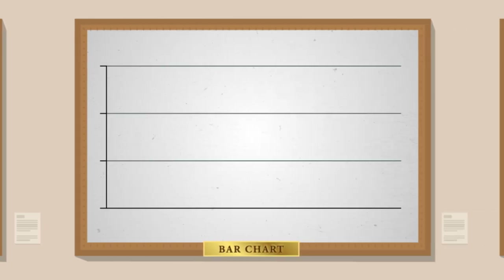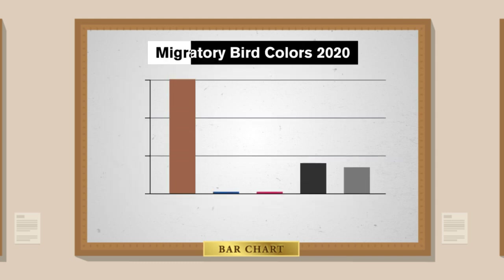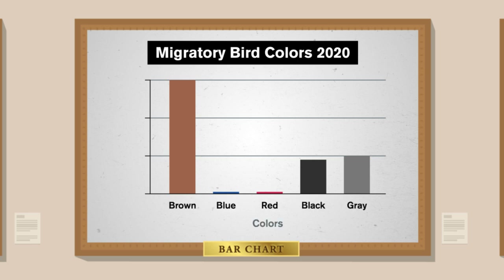In the same flavor as a pie chart, a bar chart also helps us tell stories with comparisons. Like if we wanted to study the birds by color and see which is most prominent, we label each color horizontally, and then the height of each bar shows how many birds we saw of that color. My money's on brown.